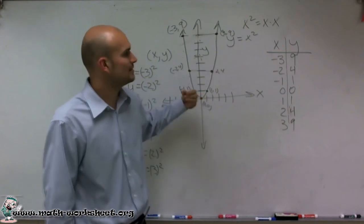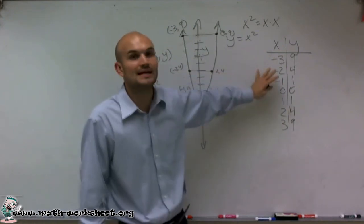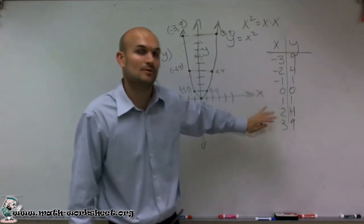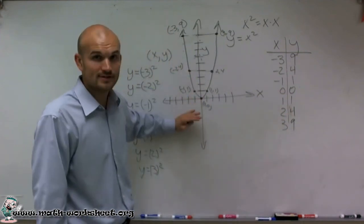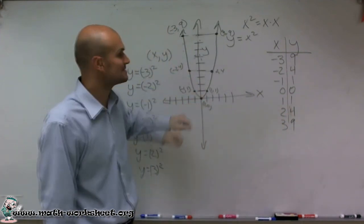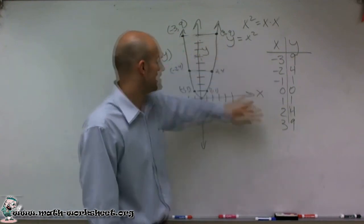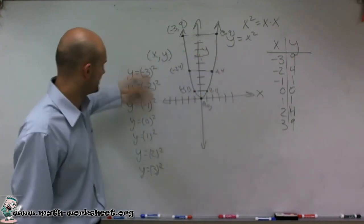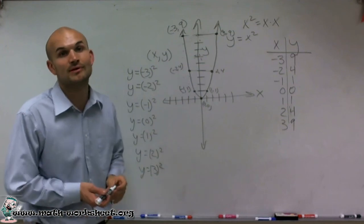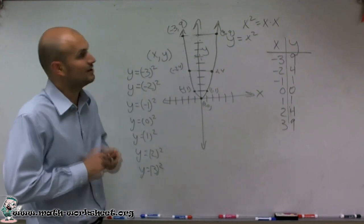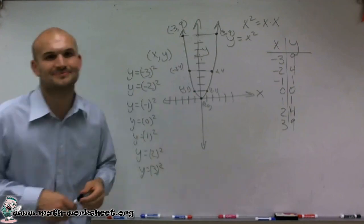When learning how to graph, the main important thing is you being able to use a table. And when we get to different functions, I'll show you how that's going to alter depending on where your graph is. Just understand: you use your table, you plug it in, and you get a table of values — and also remember you have symmetry as well. So there you go, ladies and gentlemen. That's how you graph a quadratic. Thanks.